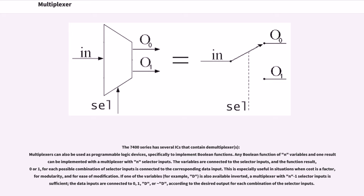Multiplexers can also be used as programmable logic devices, specifically to implement boolean functions. Any boolean function of n variables and one result can be implemented with a multiplexer with n selector inputs. The variables are connected to the selector inputs, and the function result.